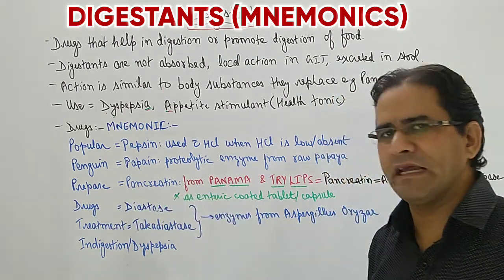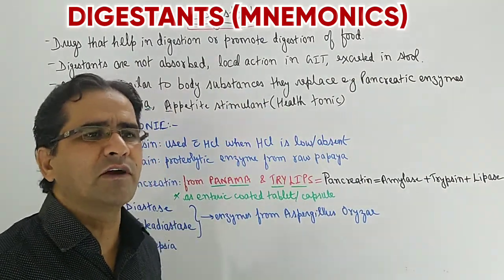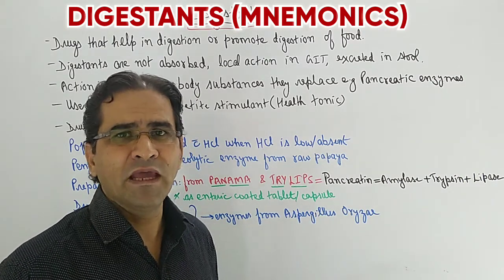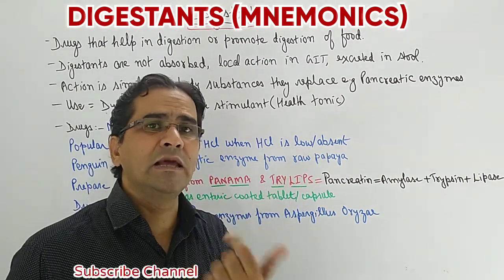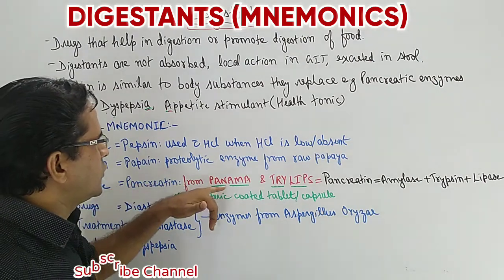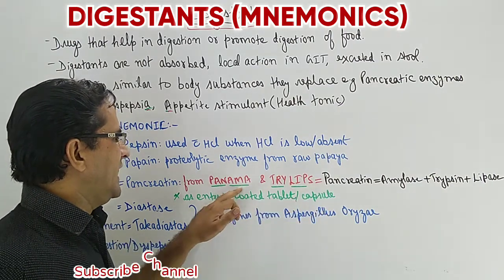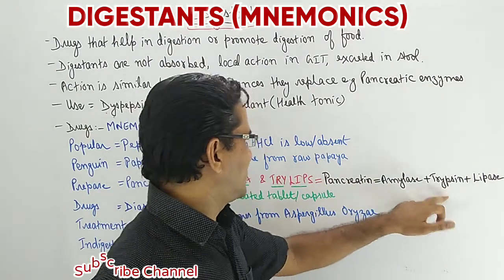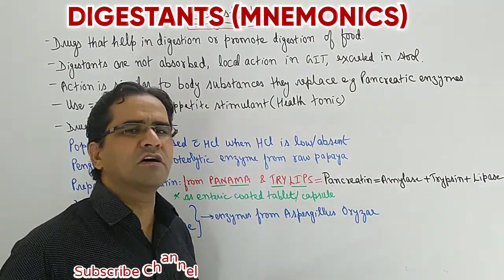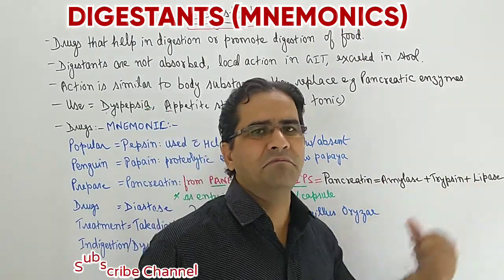Prepare stands for pancreatin. Pancreatin is frequently asked about in exams. The mnemonic here is: pancreatin equals Panama and TRI-LIP — Pan for pancreatin, AMA for amylase, TRI for trypsin, and LIP for lipase. So pancreatin is a combination — a mixture — of three enzymes: amylase, trypsin, and lipase.